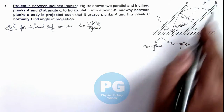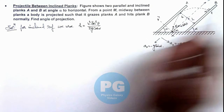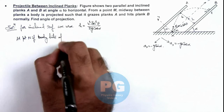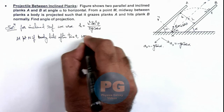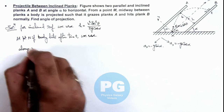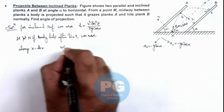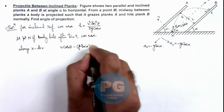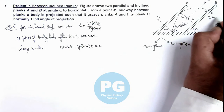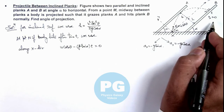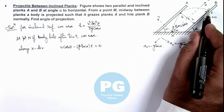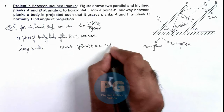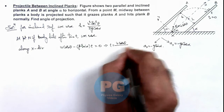After time t, the horizontal speed in the x-direction becomes zero when it hits plank B normally at point N. Along the x-direction we can write: u·cos(θ) minus g·sin(α) multiplied by t equals zero, because at point N the velocity in the x-direction is zero when it hits plank B. This gives us the time t equals u·cos(θ) divided by g·sin(α).